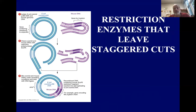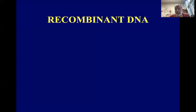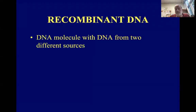Now we have to get the plasmid into some kind of cell, usually E. coli. As the E. coli grows and divides, it will make copies of the plasmid with our mouse gene in it. A recombinant DNA molecule is simply a molecule that contains DNA from two different sources, like the cosmid and the mouse gene of the previous slide.